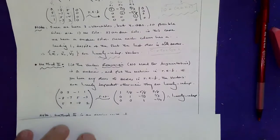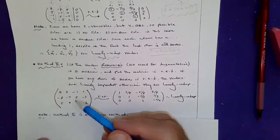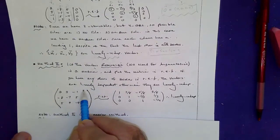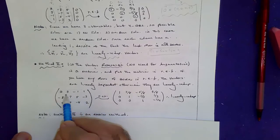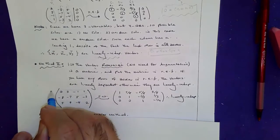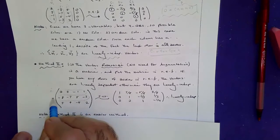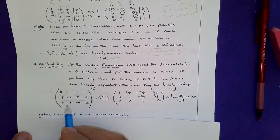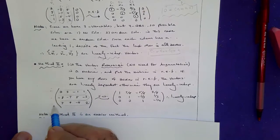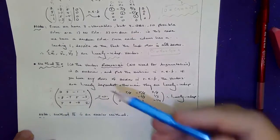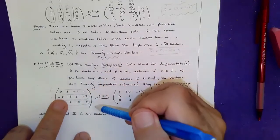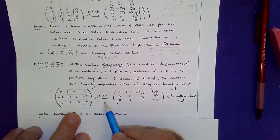The other way would be list the vectors row-wise. So this guy is my V1. This guy is my V2. And this guy, the row 3, is my V3. So do you see it? I'm listing the elements row-wise. Put this in row echelon form.